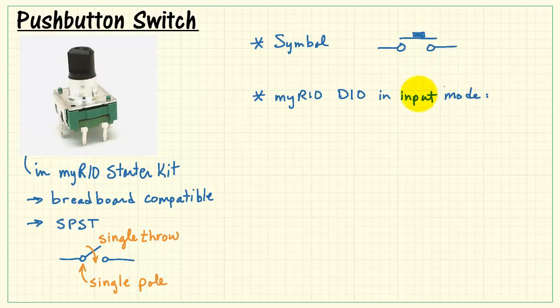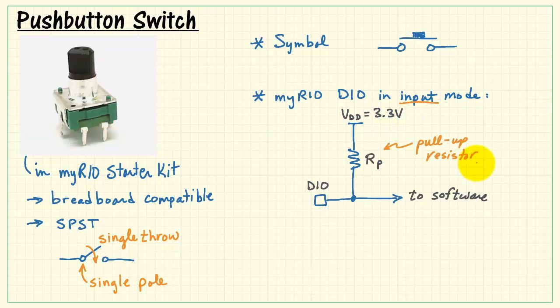To get a sense of how to connect the switch to MyRio, let's take a look at the DIO, that is the digital input-output, when it's in input mode. Basically, we think of it as just a signal going directly into the software. But when it's in input mode, we have a pull-up resistor to 3.3 volts. This pull-up resistor exists on every DIO in the MXP-style connectors, which are connectors A and B.